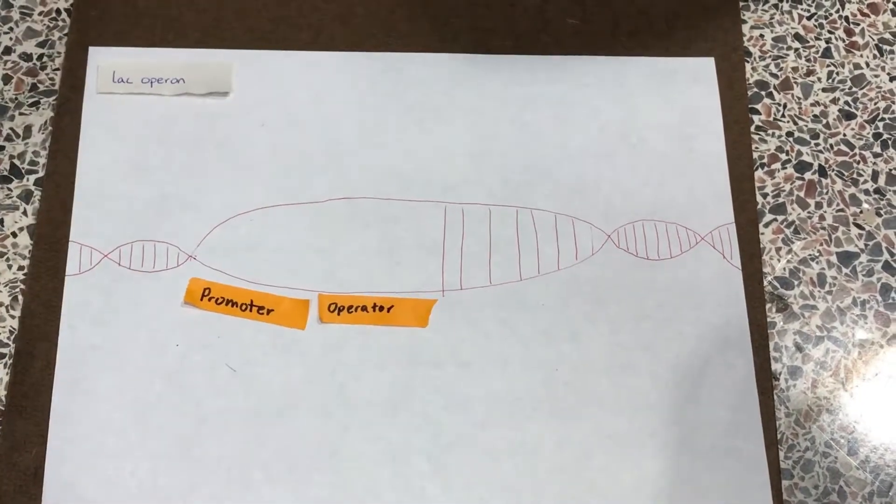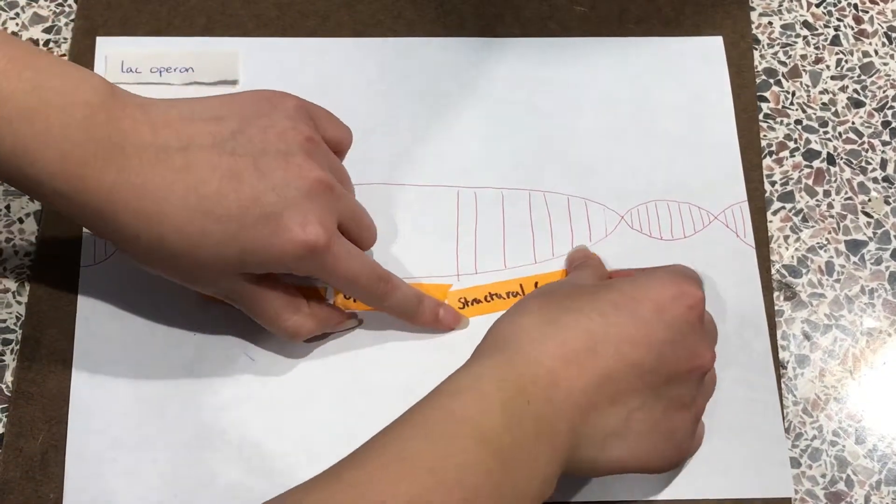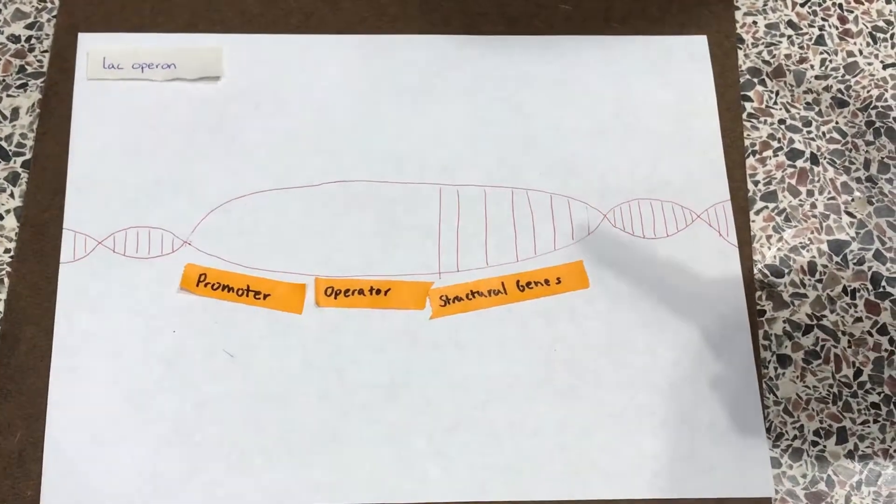The first is the promoter where RNA polymerase will bind, the second is the operator where the active repressor will bind, and the third part is the structural genes.